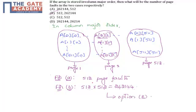From this question, what we learn is how to find the number of page faults using column major order. Thank you.